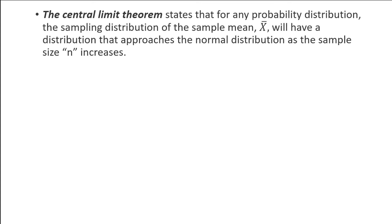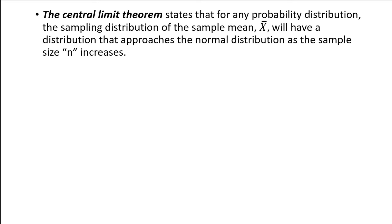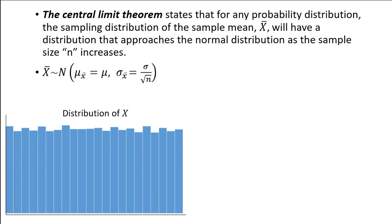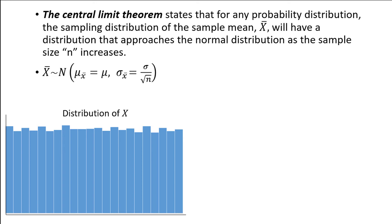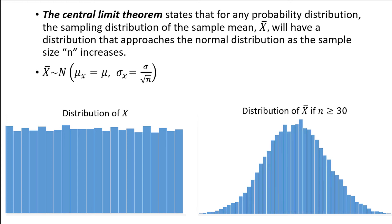As a reminder, the Central Limit Theorem states that for any probability distribution, the sampling distribution of the sample mean, x-bar, will have a distribution that approaches the normal distribution as the sample size n increases. x-bar will have an approximately normal distribution with the same mean as the original distribution and a standard deviation equal to the original standard deviation sigma divided by the square root of the sample size n. If the original distribution looks like this, or any other non-normal distribution, then the distribution of the sample mean will look like this — a normal distribution — assuming that the sample size is at least 30.